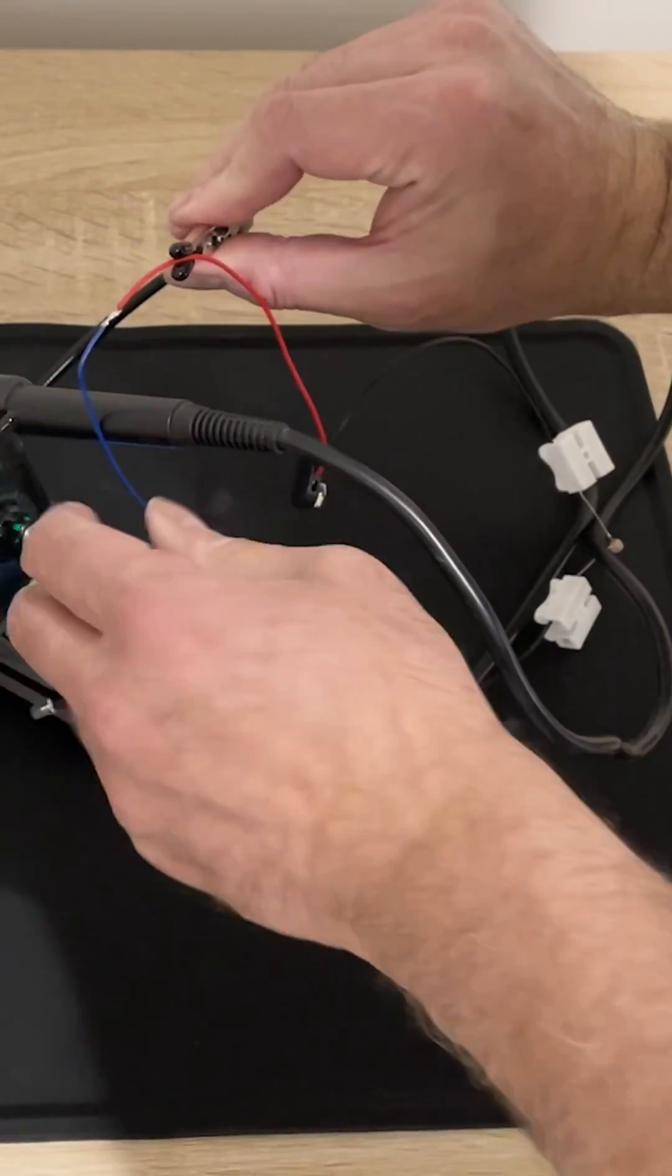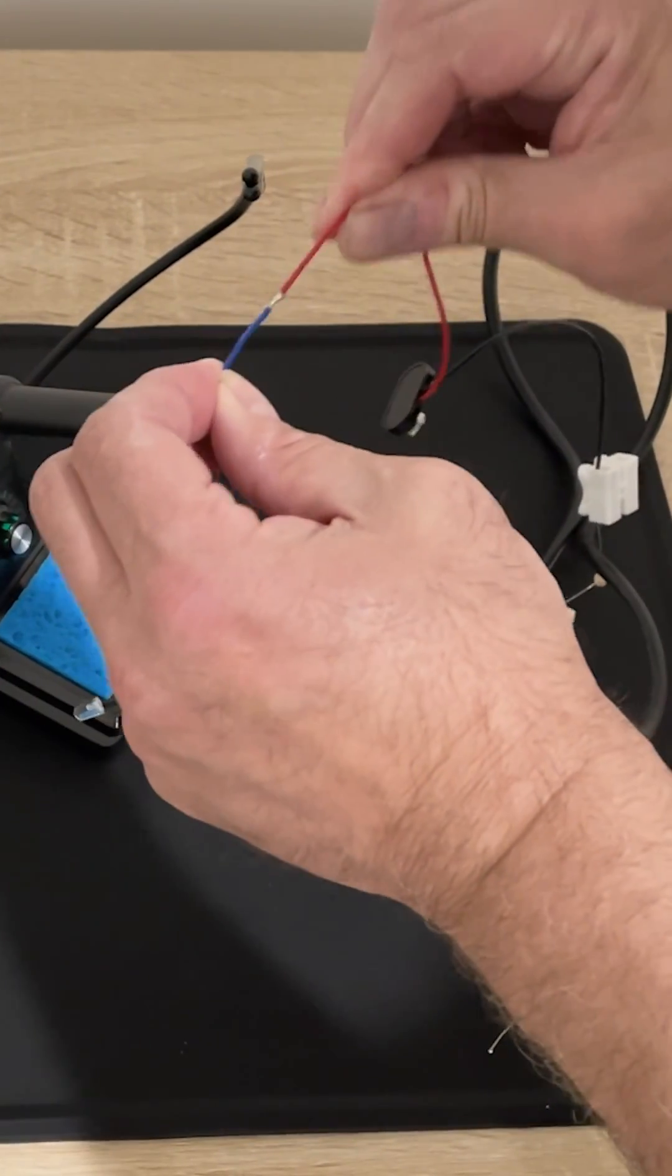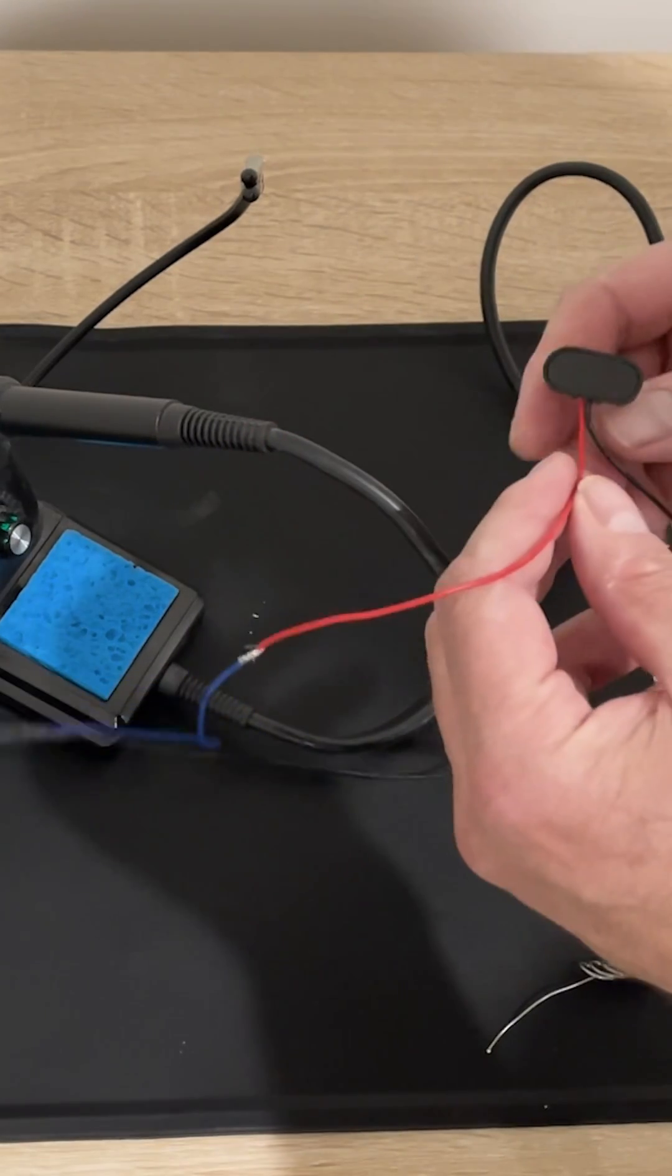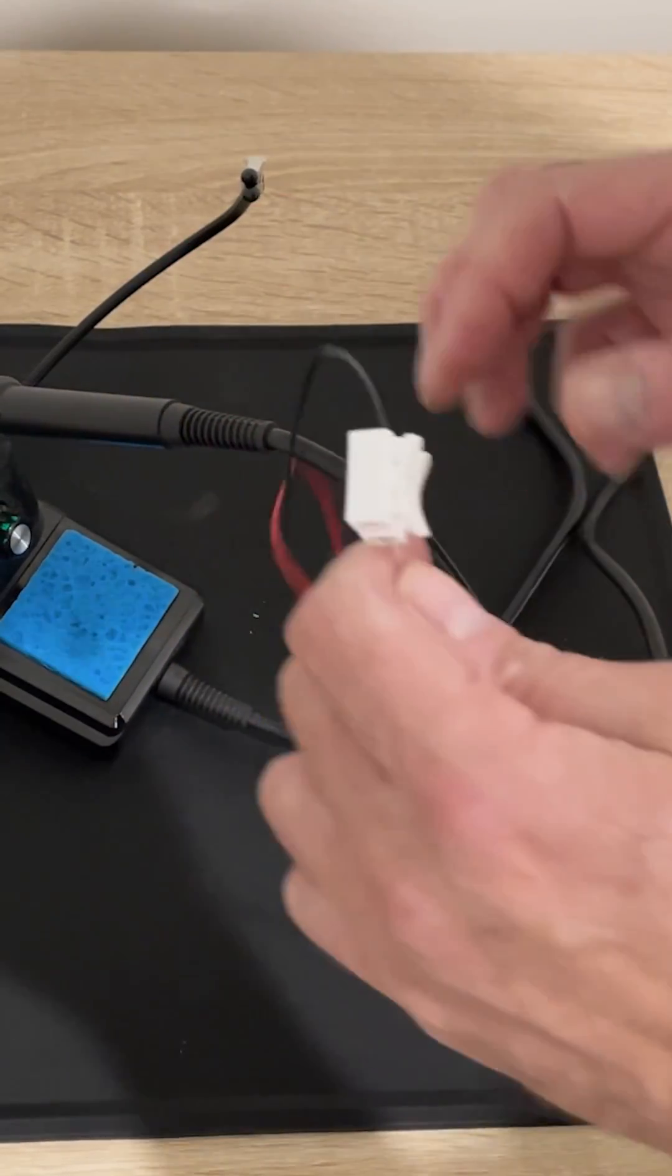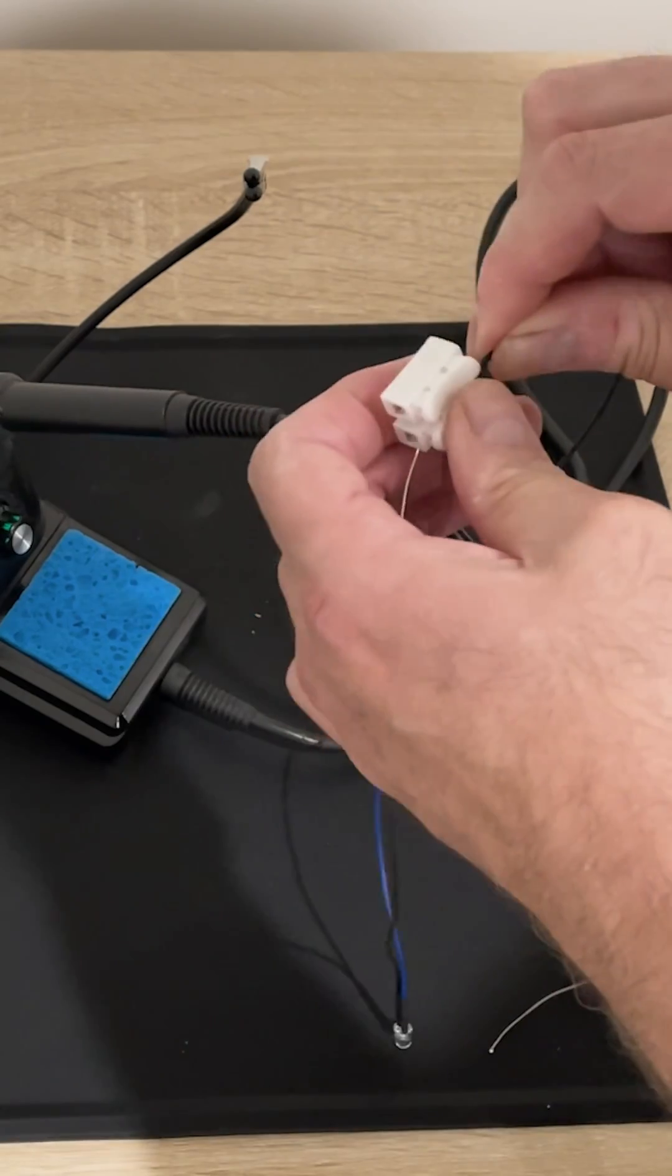Now that that is soldered and we can see we got a good strong joint, we're going to just keep going around and solder all the wires.